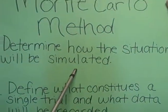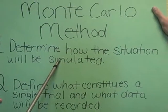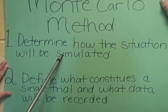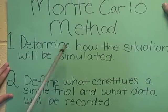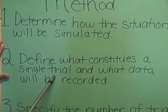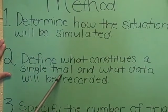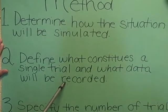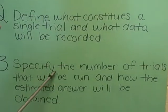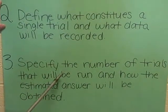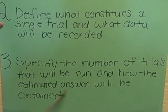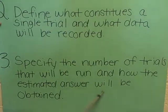We give you three examples: rolling a die, flipping a coin, and choosing cards. Step two: define what constitutes a single trial and what data will be recorded. And the final step is to specify the number of trials that will be run and how the estimated answer will be obtained.